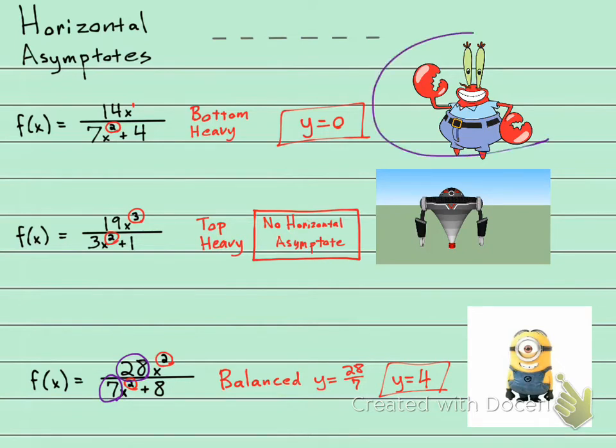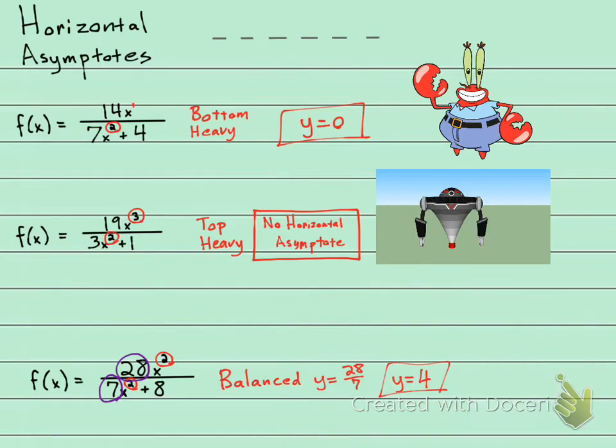Up here we have Mr. Krabs from SpongeBob SquarePants. If you look at him, and only him, I would assume that he is a bottom-heavy character, right? He's bigger on the bottom.